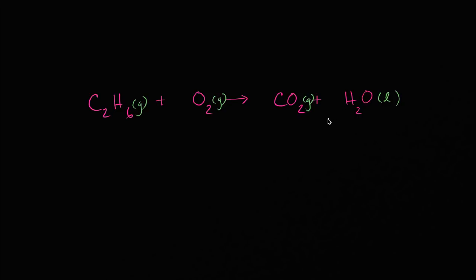Like we did in the example with ethylene, whenever you have several somewhat complex molecules involved, it's good to save the element that is in a molecule by itself for last. You can just tweak the dioxygen molecule to change the number of oxygens without any side effects on the number of carbons or hydrogens. So I'm going to first balance the carbons and the hydrogens, which will have implications on the oxygens, and then tweak oxygen at the end.